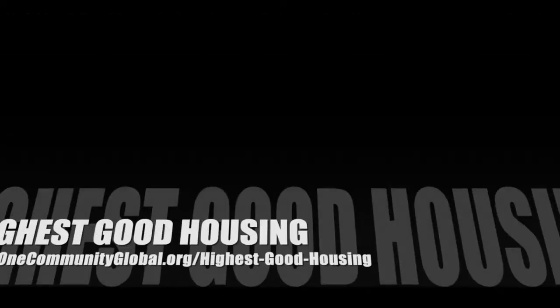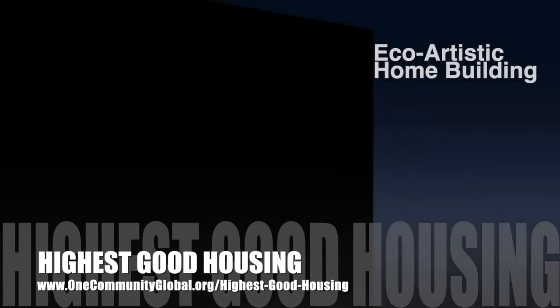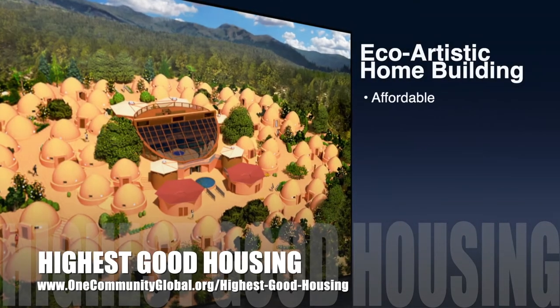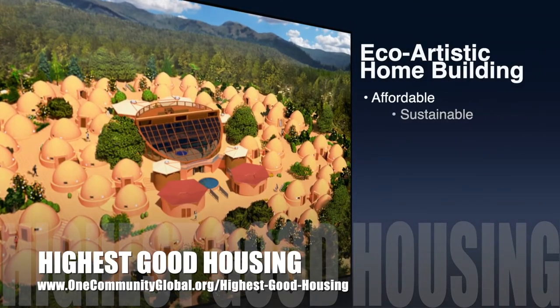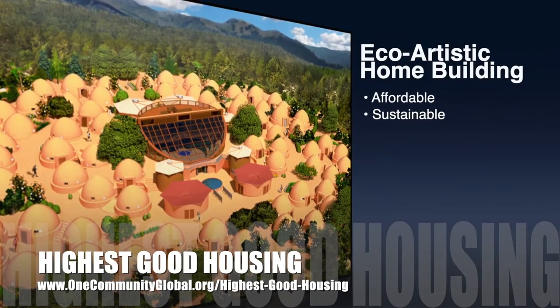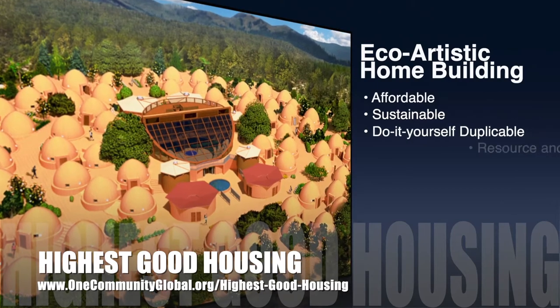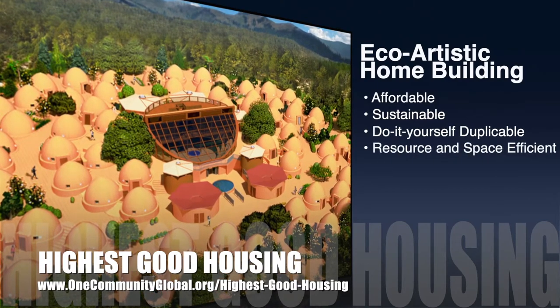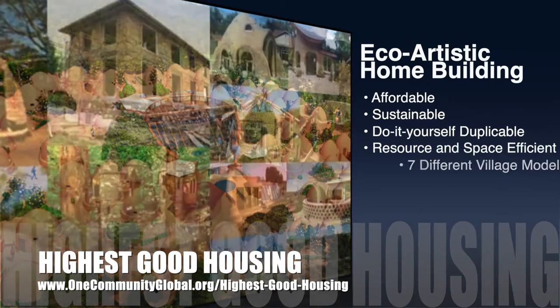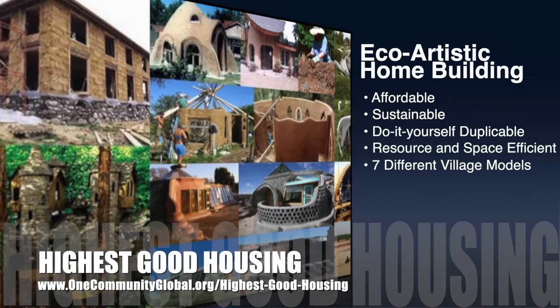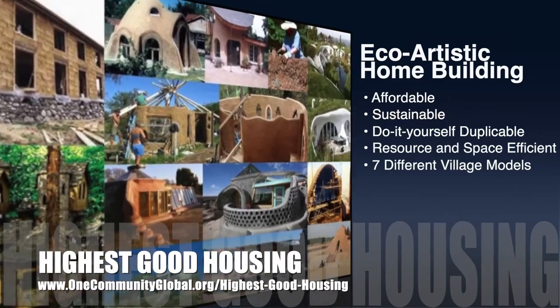The One Community approach to highest good housing is eco-artistic home building that is affordable, sustainable, do-it-yourself duplicable, resource and space efficient, and consists of seven different sustainably constructed village models.